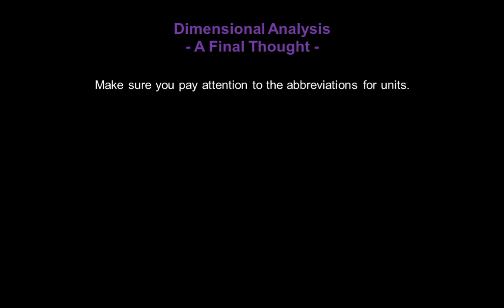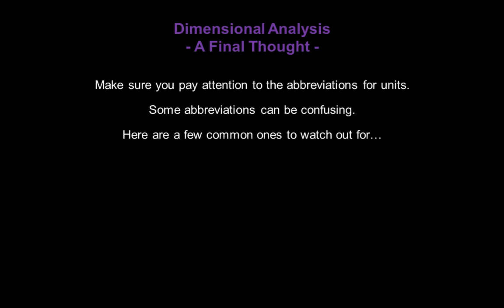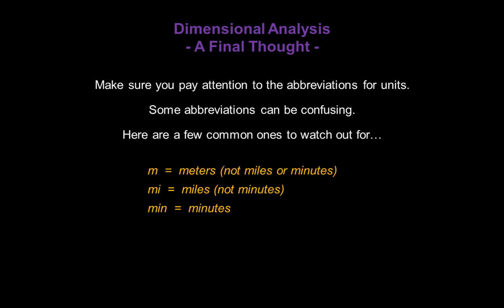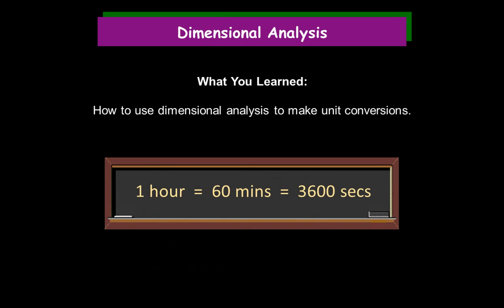Here's a final thought on dimensional analysis: make sure you pay attention to the abbreviations for your units, as some can be confusing. If you see m, that's meters — not miles or minutes. If you see mi, that's miles, not minutes. Min means minutes. If you see s, sec, or secs, that's seconds. Lbs is short for pounds, and oz means ounces. Congratulations! You've learned how to use dimensional analysis to make unit conversions.